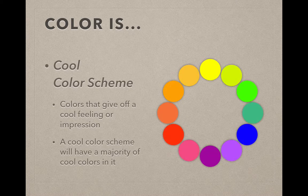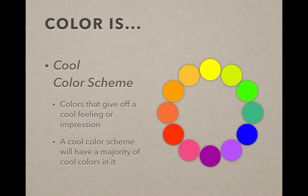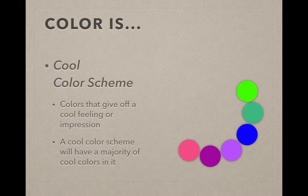The last color scheme we're going to talk about is cool color scheme. And these are the other half of the color wheel. And these are colors that give you a cool impression or cold impression. Again, a cool color scheme is going to have a majority of cool colors and it may have a couple warm colors in it, but the majority of the piece should be cool.